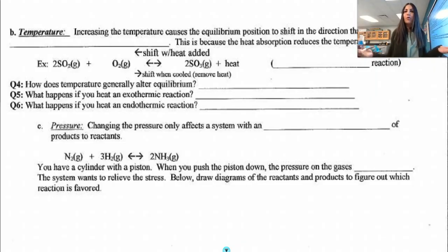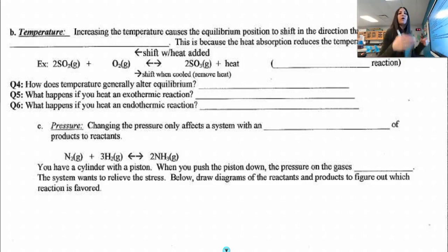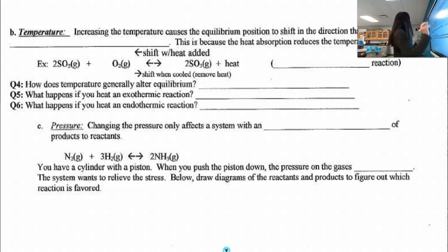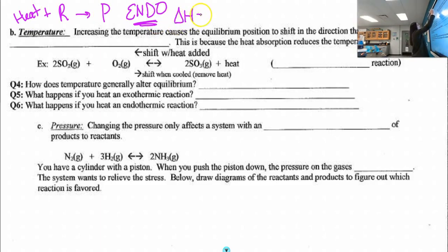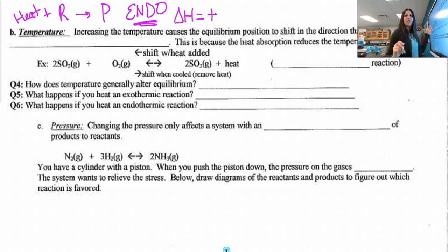So if we increase the temperature, it's going to favor the opposite side from where the heat is, which means we need to know if it's exothermic or endothermic. If heat is on the left side of the reaction, it's an endothermic reaction, and delta H should be positive. If I had reactants going to products plus 75 kilocalories, that would mean delta H is negative 75 kcal — that would be an exothermic reaction.